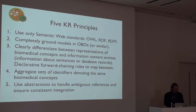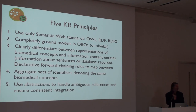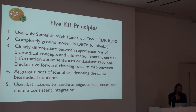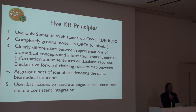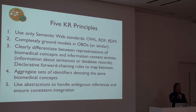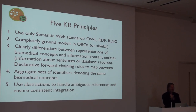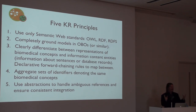So I'm going to wind up by giving you these five principles. Use semantic web standards — OWL, RDF, RDFS, SPARQL, AO. Completely ground your models in open biomedical ontologies or at least in some community-curated ontology. Differentiate between the representation of biomedical concepts and information content entities about those concepts, and use declarative forward-chaining rules to map between them. Aggregate sets of identifiers denoting the same biomedical concepts. And use abstractions to handle ambiguous references and ensure consistent integration. If we do that, I think we will get to the point where we can completely represent the meaning of the texts we are going after — and that would be a tremendous victory for text mining, for annotation, and for science broadly. Thank you very much.